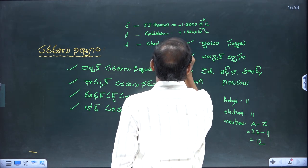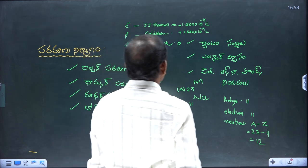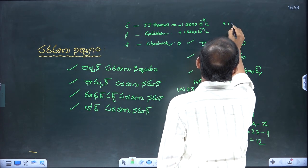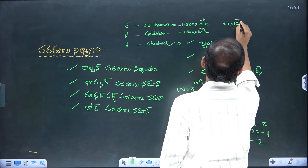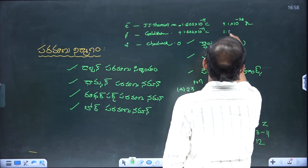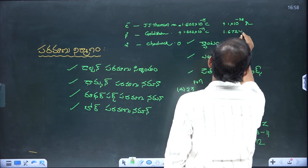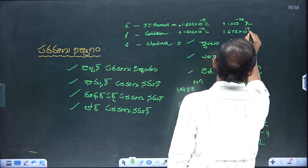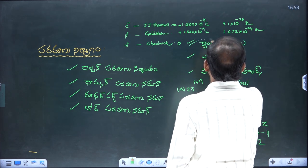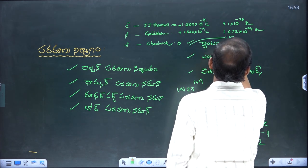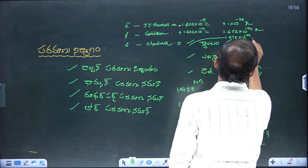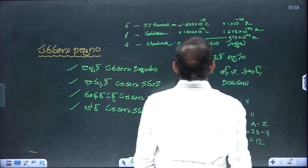The neutron has zero charge. The mass of the electron is 9.1 × 10⁻²⁸ grams. The mass of the neutron is 1.675 × 10⁻²⁴ grams. This is very important.